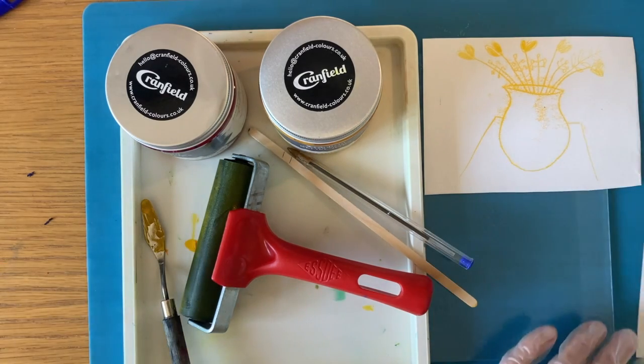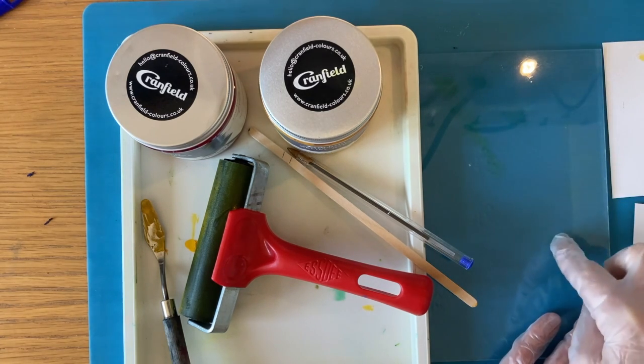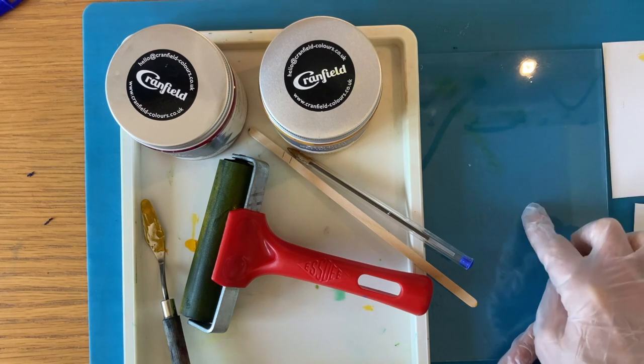And also, a very important piece is the clear perspex that you'll have. So this is what you'll use to print on.